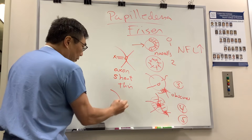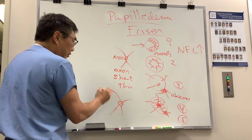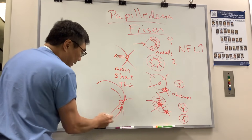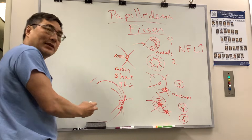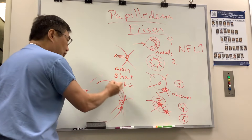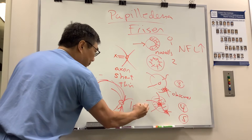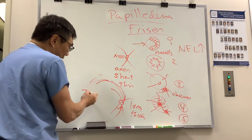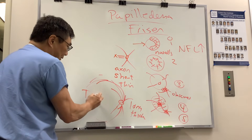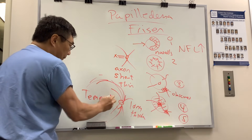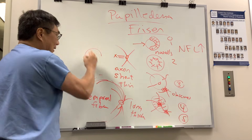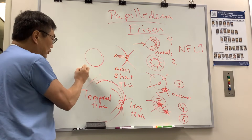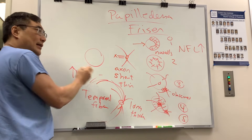The converse is also true when we get nerve damage and visual field defects from pressure-related phenomena. It's the long fibers that have to make a long trip — the long and thick fiber is more pressure sensitive. So when we get a field defect, it's the temporal fiber that's affected, resulting in nasal field loss.